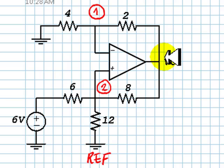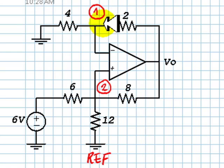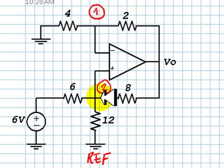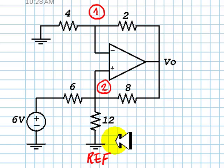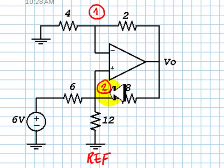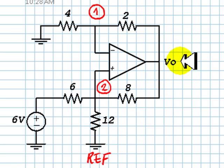What are the unknowns for this problem? There are three: V1 is an unknown — the voltage of this node with respect to the reference — V2 is a second unknown, and V0 is a third unknown. We need three equations. So far, we can write a KCL equation at Node 1 and a KCL equation at Node 2, but we are advised never to write a KCL equation at the output node. We need a third equation.